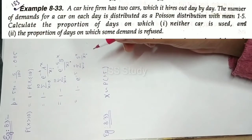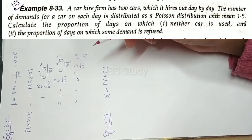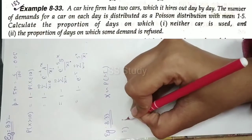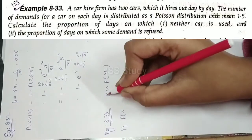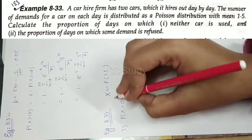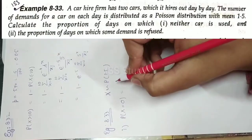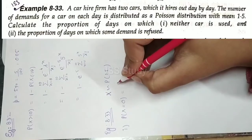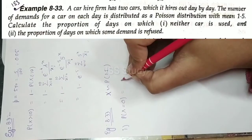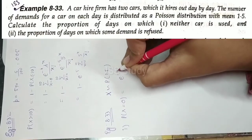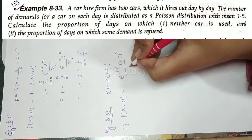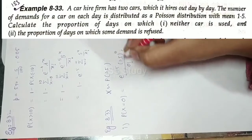First, we calculate the proportion of days on which neither car is used. No car is used means x equals 0. Using the Poisson formula, P(x=0) equals e to the power minus lambda, times lambda to the power 0, divided by 0 factorial. Since lambda to the power 0 and 0 factorial are both 1, this equals e to the power minus 1.5.